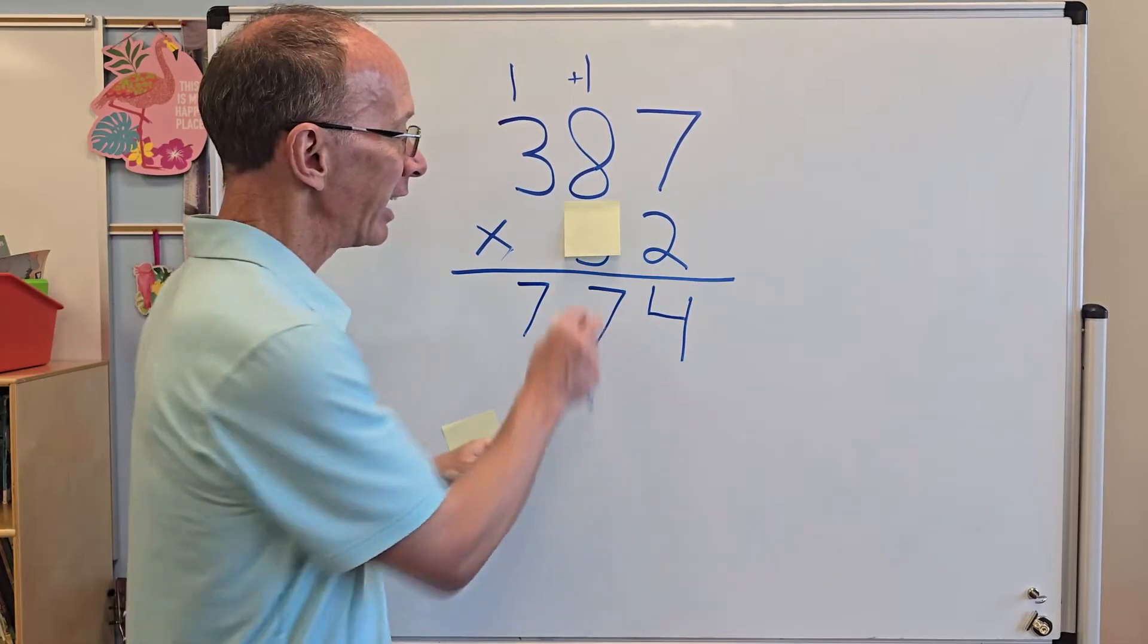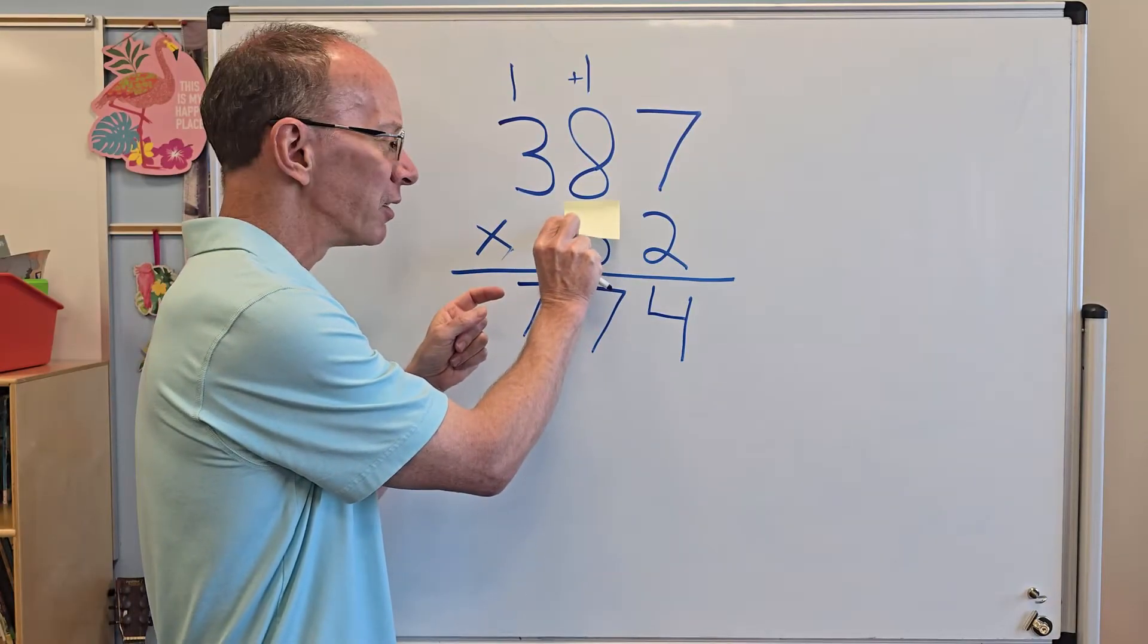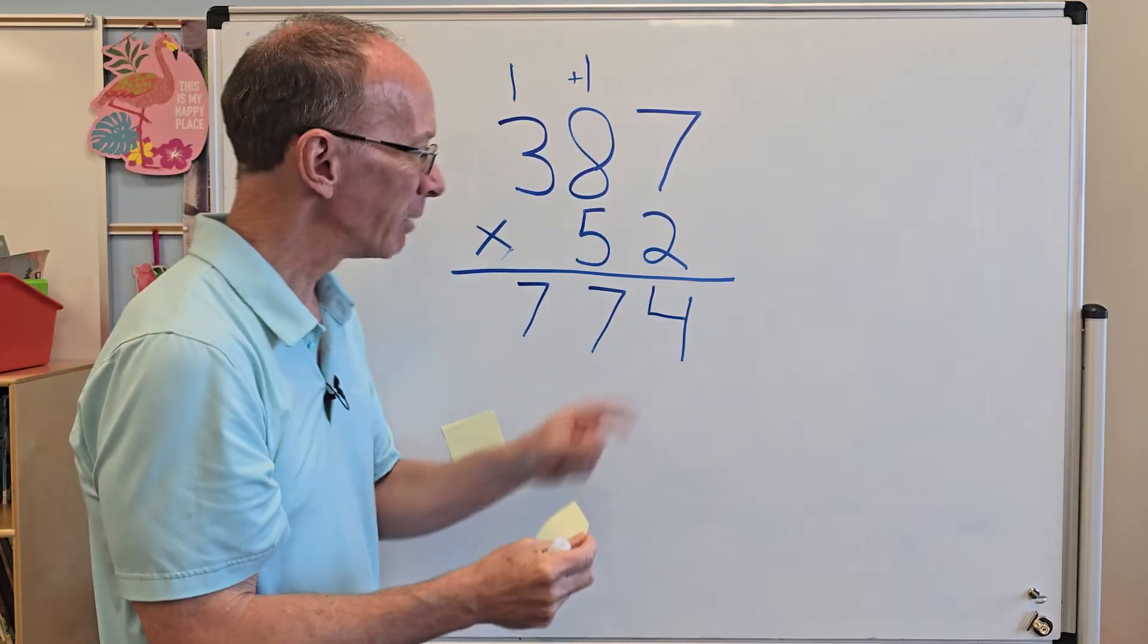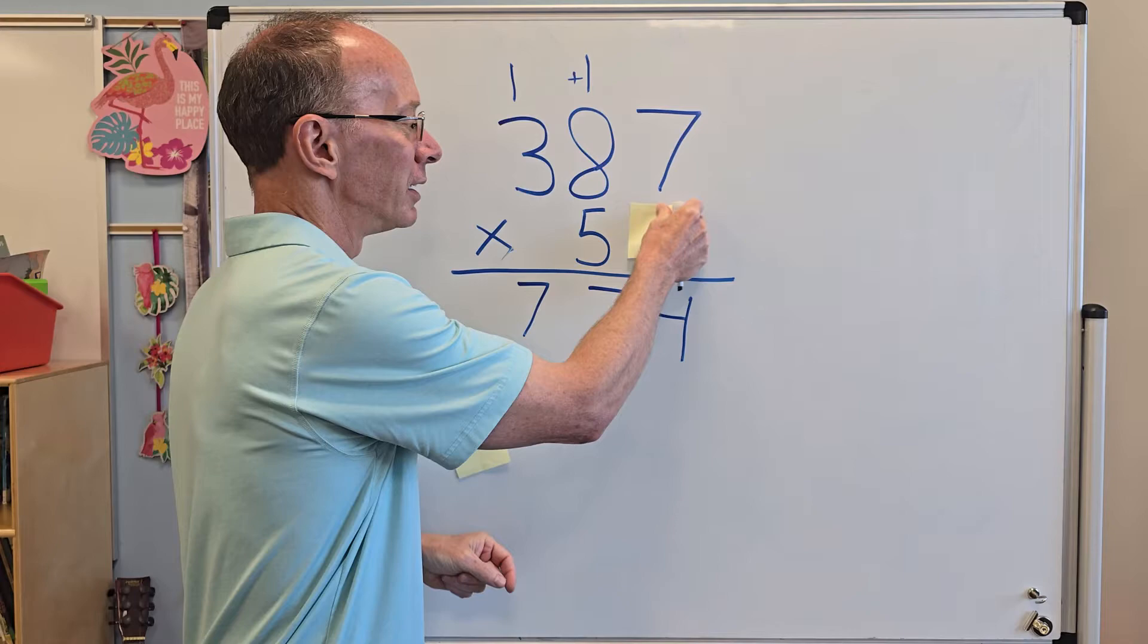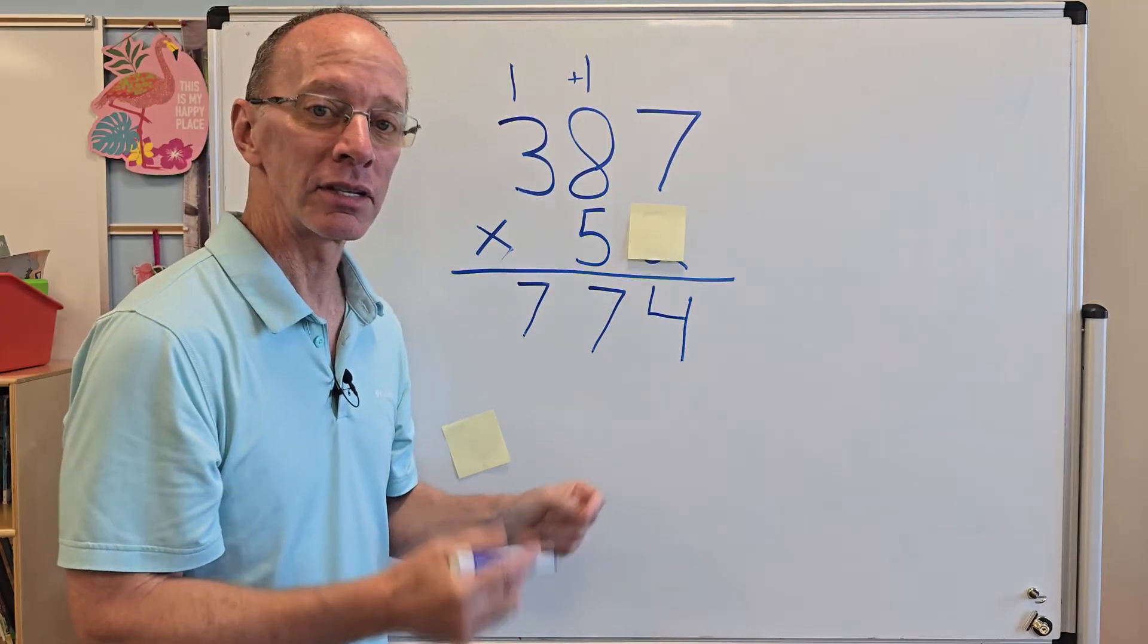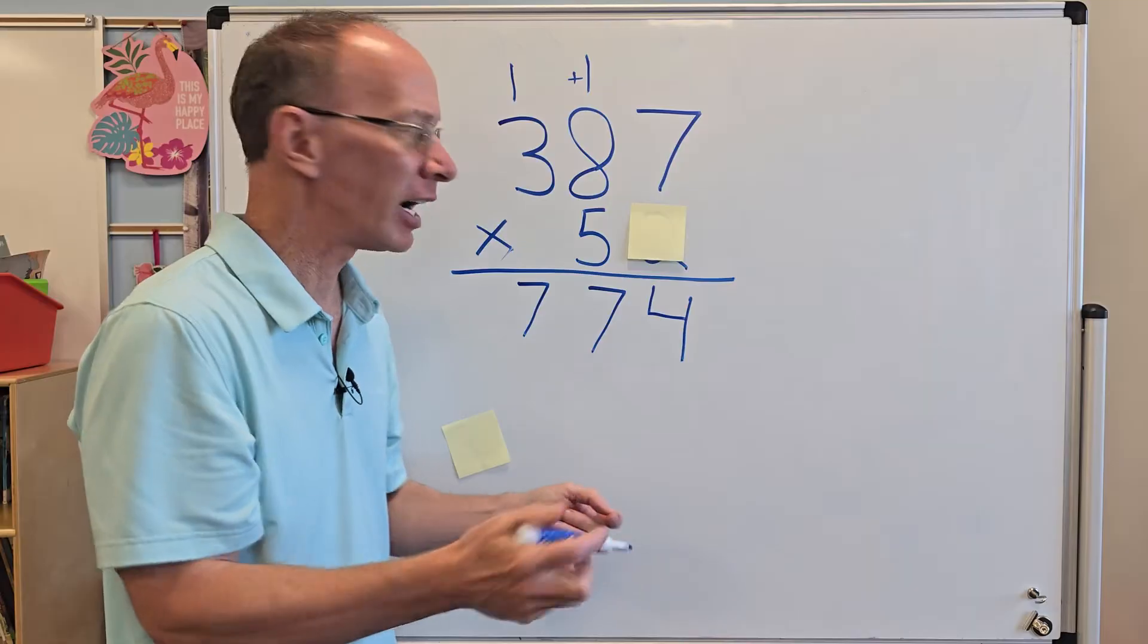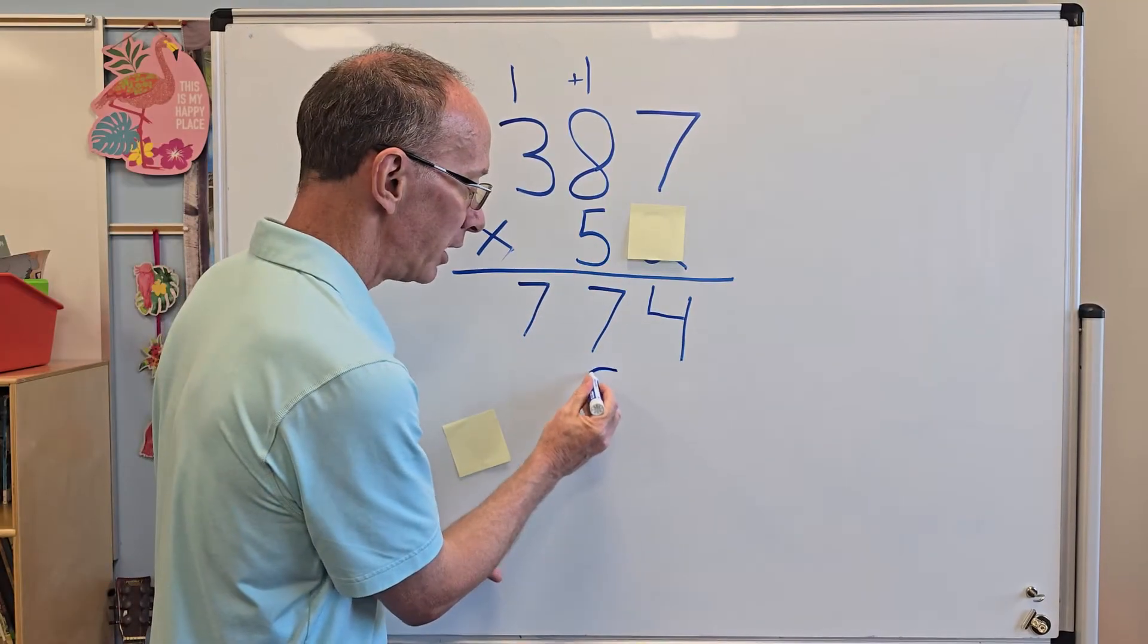We're not done yet. Now I have to work with this hidden number underneath there. Got to make sure there's no spiders underneath there. Now I'm going to take that post-it note and I'm going to cover up this two, because we've already worked with that. Look at that. Now it's easy cheesy. I'm going to take five times seven equals 35. Where do I start with the writing? Right below that five. So I put the five right here.